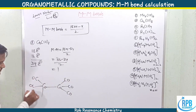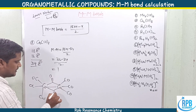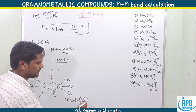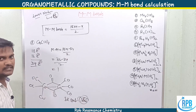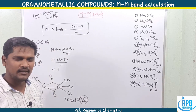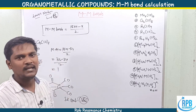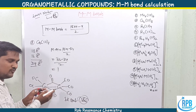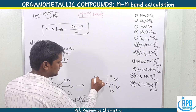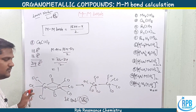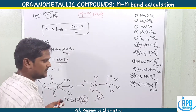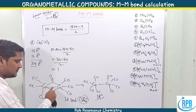For Co₂(CO)₈, we observe two bridged carbonyls along with three terminal carbonyls on each metal in the solid state, according to IR spectroscopy data. When Co₂(CO)₈ is dissolved in a solvent like hexane, these two bridged carbonyls become terminal CO groups, giving four terminal carbonyls on each metal in solution. Both solid and solution state show only one Co–Co metal bond.